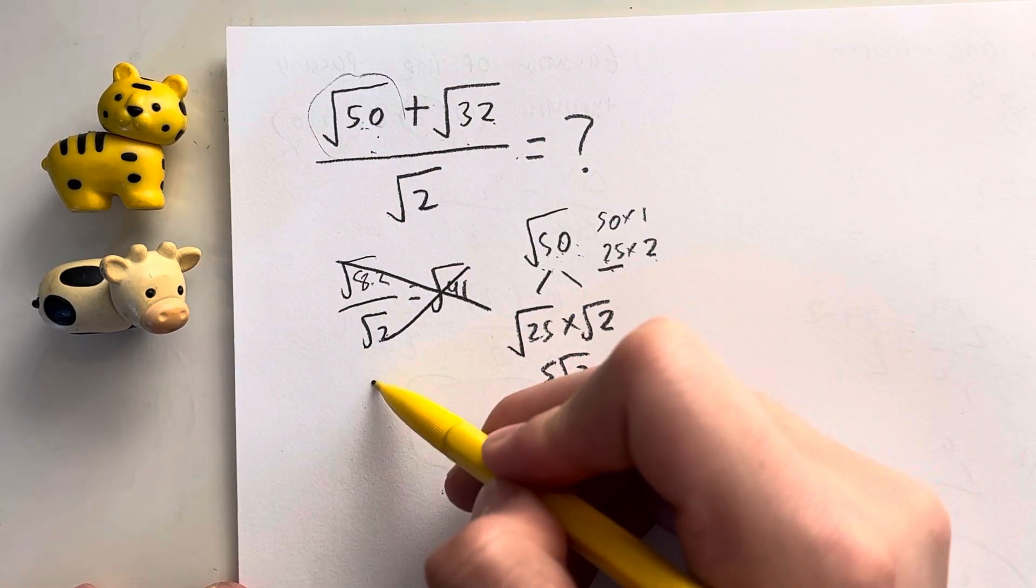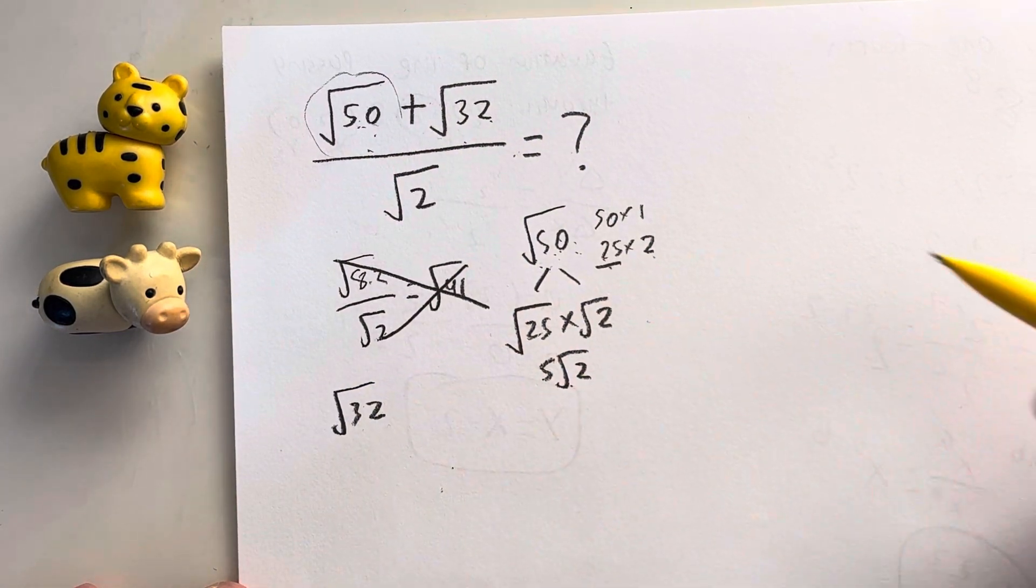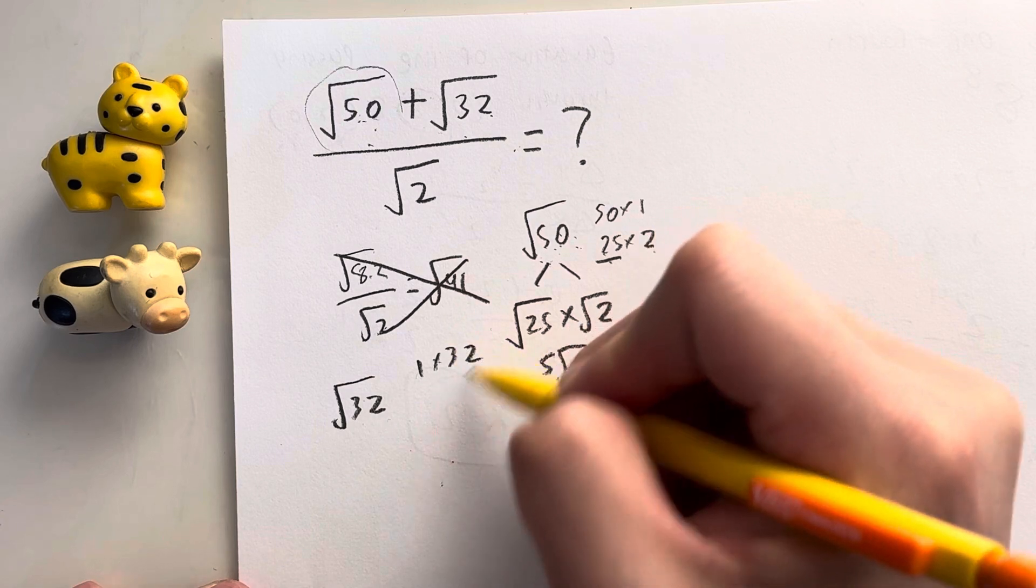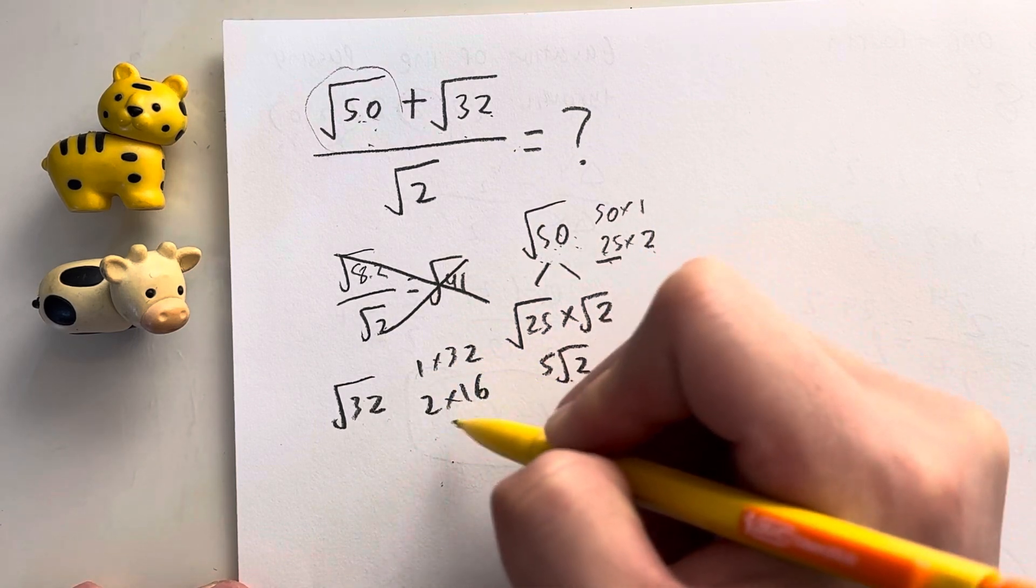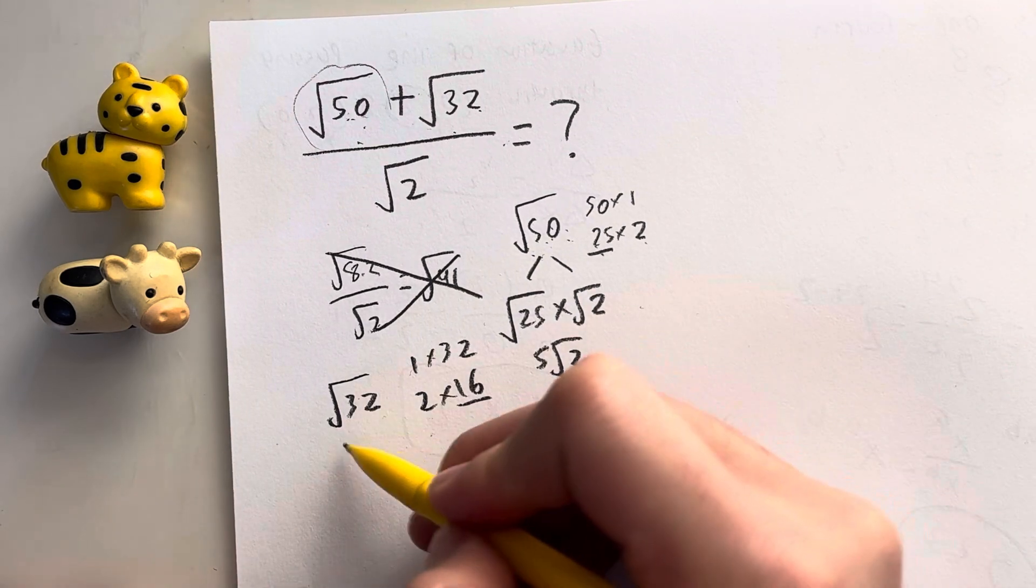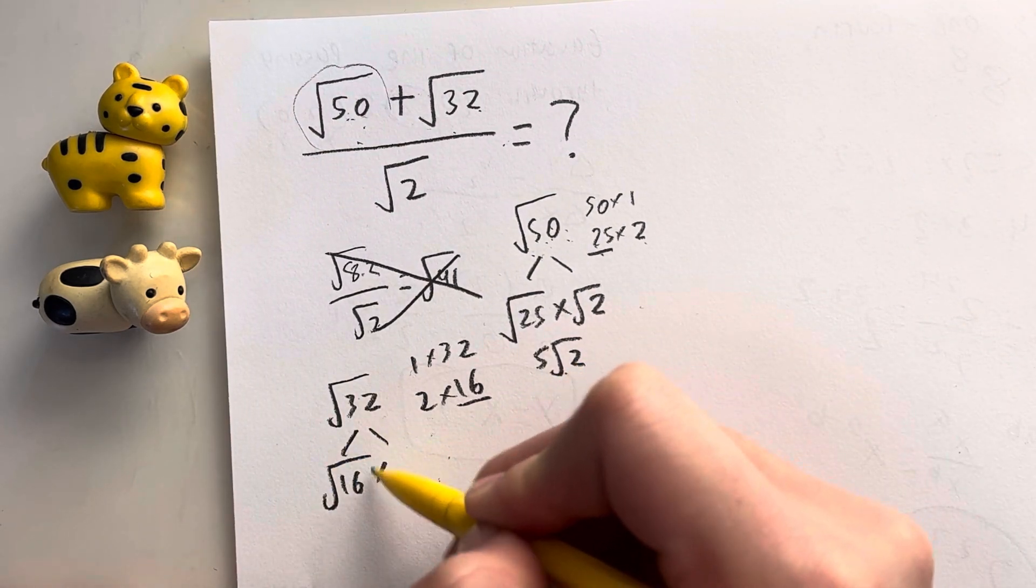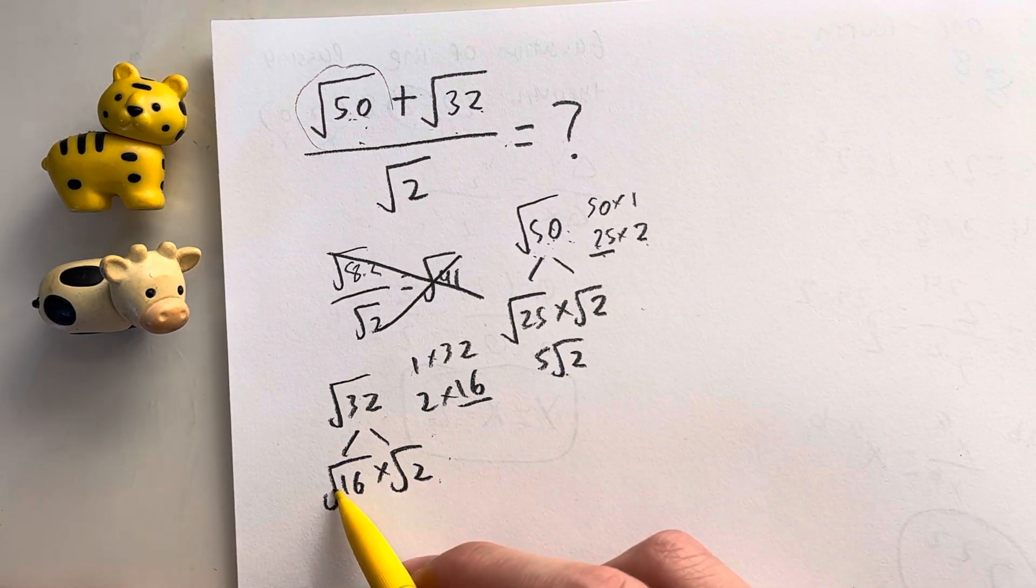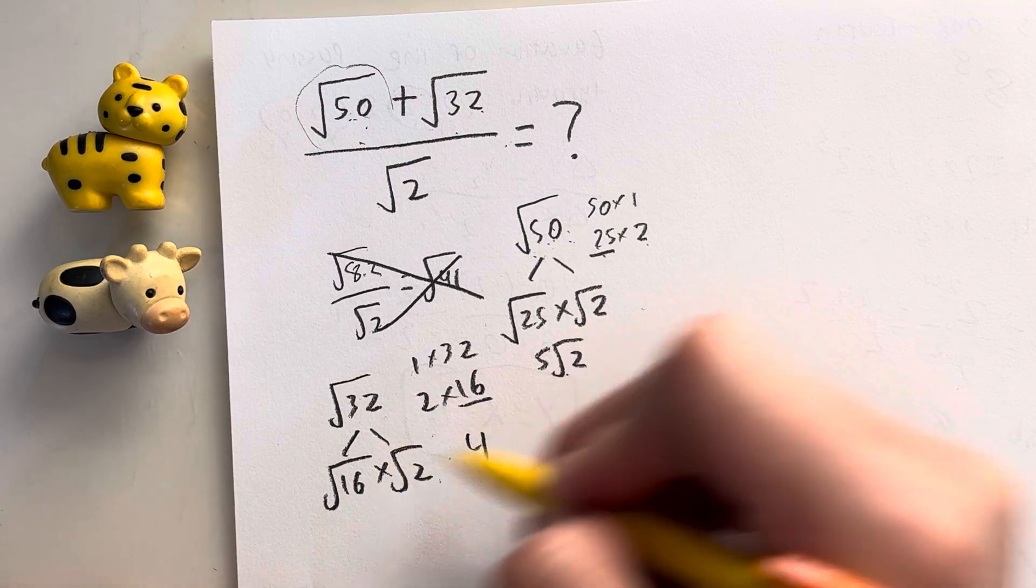How about the square root of 32? What are some factors of 32? That's going to be 1 times 32, 2 times 16. Oh, actually, let's stop there because 16 is a perfect square. So that gives us the square root of 16 times the square root of 2. The square root of 16 is just equal to 4 root 2.